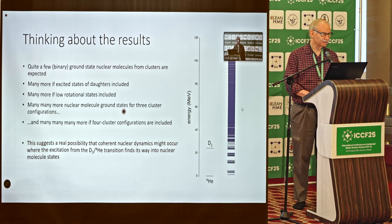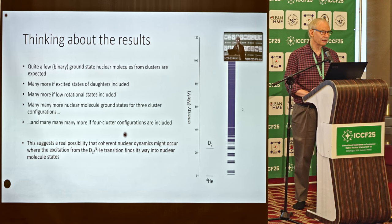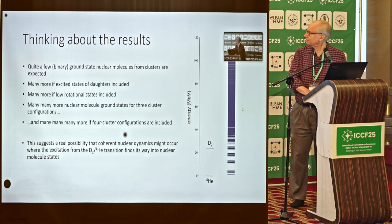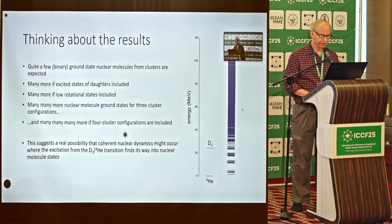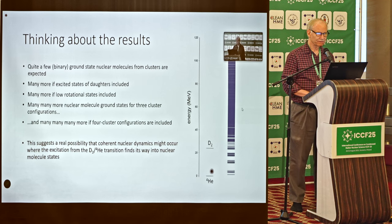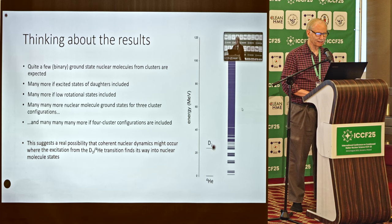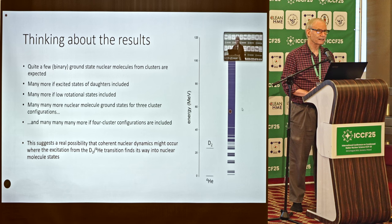There are three-cluster configurations, four-cluster configurations. All of this is suggesting there's a real possibility of having an enormous number of nuclear molecule states. The idea is that over here we've got the D2 to He-4 transition near 24 MeV, and over here we've got a very large number of reasonably stable nuclear molecule states. So we could get the excitation from here, somehow up to here, and then we'd have a serious chance of communicating the energy to the lattice or to plasmons.